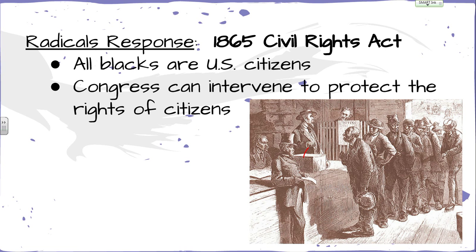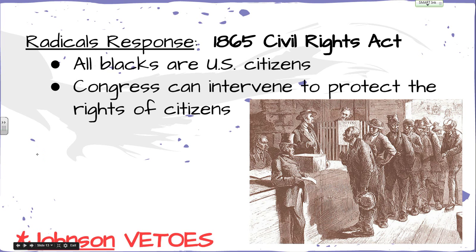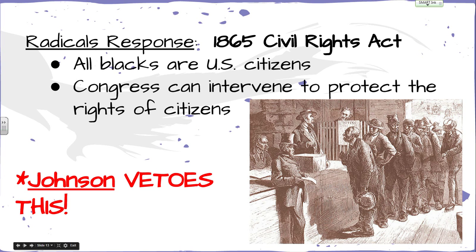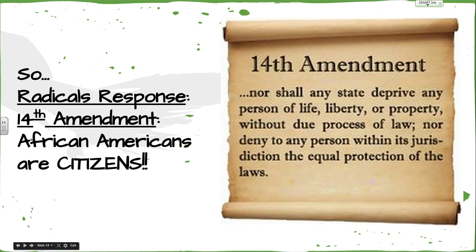The radicals' response was to try to pass the 1865 Civil Rights Act, which declared all blacks as U.S. citizens and allowed Congress to intervene to protect them. But Johnson vetoed that. So the radicals came back and passed the 14th Amendment in Congress, which said African Americans are now citizens of the United States. Legally, they had now protected them.